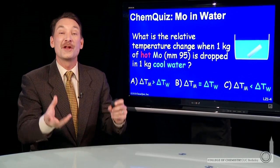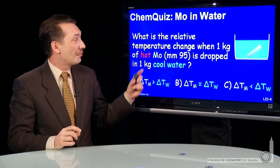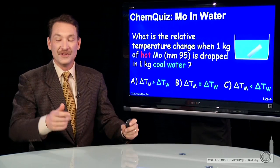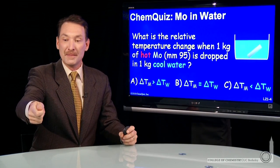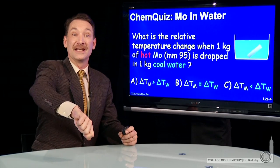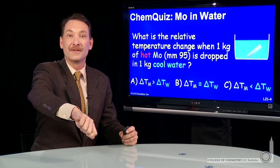Let's use heat capacities to determine a relative temperature change. I'm going to take hot molybdenum metal, a kilogram. Think about taking molybdenum metal, heating it in a flame till it's red hot, and then plunging it into a kilogram of water at room temperature.